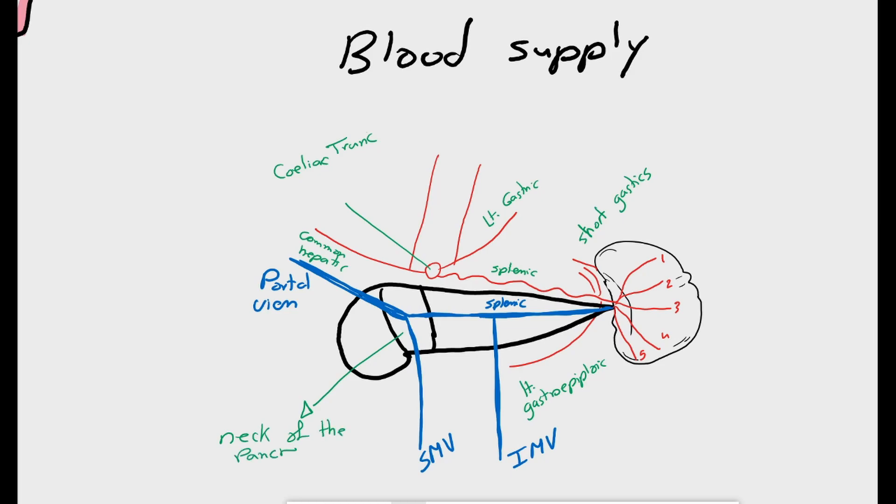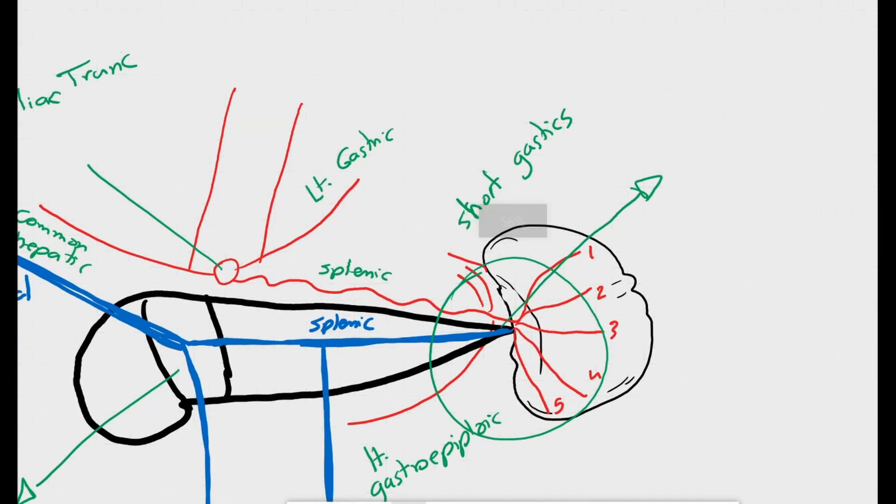Another important relation with the pancreas is that the tail of the pancreas is closely related to the hilum of the spleen, in close proximity to the splenic vessels.